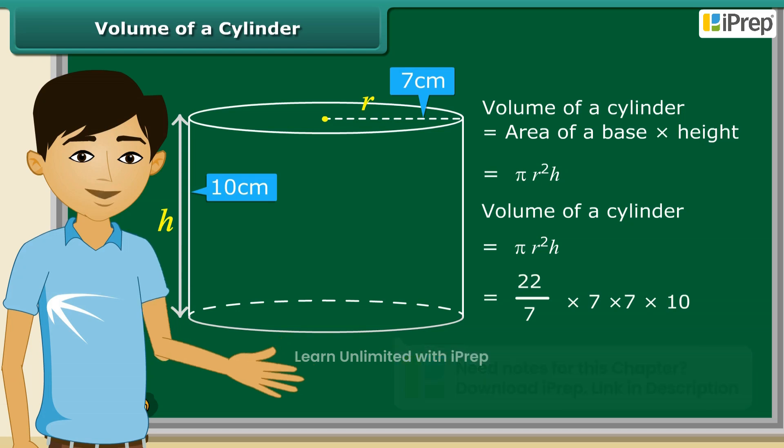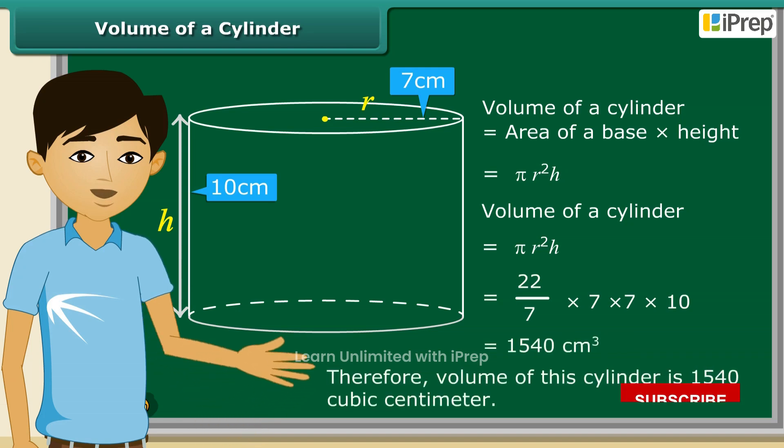So, 22 by 7 into 7 into 7 into 10. This gives 1540 cubic centimeters. Therefore, volume of this cylinder is 1540 cubic centimeters.